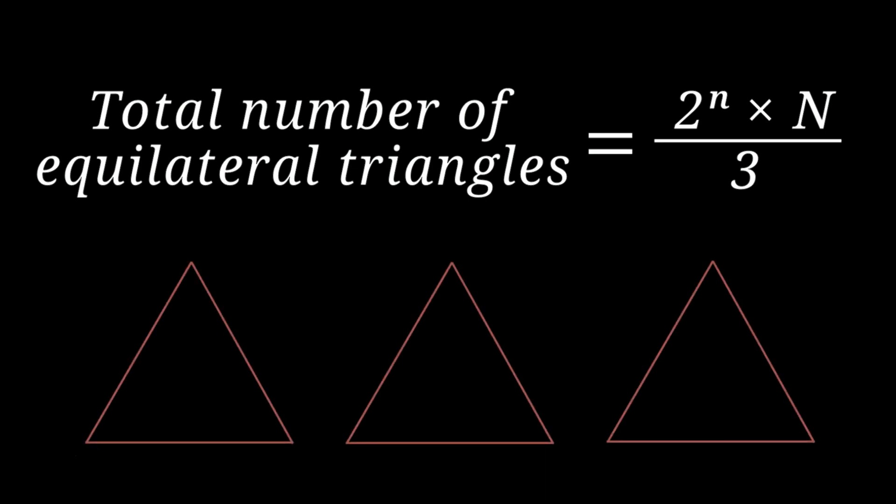This can be seen as follows. If we consider an equilateral triangle with the vertices p, q and r, it will be counted three times with p as the main vertex once, q as the main vertex once and r as the main vertex once.